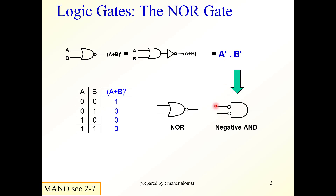If we put A here, the bubble tells you that A is complemented before it goes as an input. Similarly B is complemented before entering the gate. The truth table shows the output is equal to 1 only if A and B are both zeros — this is the complement of the OR.